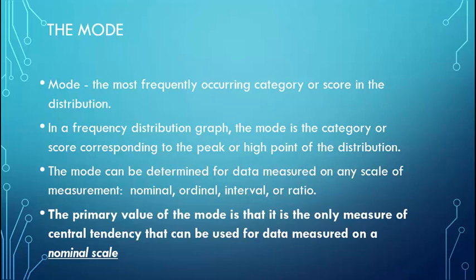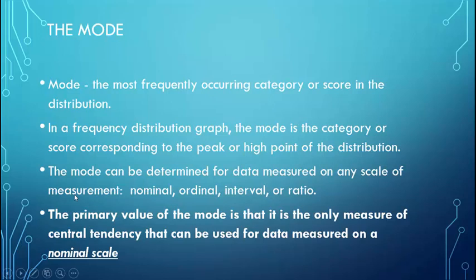The mode is the most frequently occurring score in a distribution. If you were looking at a frequency distribution or histogram, the highest point — the peak of that distribution — would be the mode, because that would be the most frequent score. You can find a mode no matter what type of data you have: nominal, ordinal, interval, or ratio. The key point is that the mode is the only measure of Central Tendency you can use for nominal data or group data.